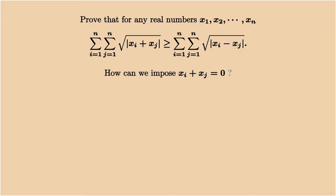Now comes the tricky question: how can we even make sum of xi plus xj equal to 0?